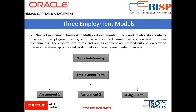Next is single employment term with multiple assignment. In this employment model, a work relationship contains one employment term, and that employment term can have multiple assignments. The employment term and one assignment are created automatically when you create a work relationship with an employer. Additional assignments can be created manually later. There is one work relationship, one employment term, and multiple assignments under that term.